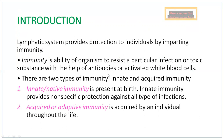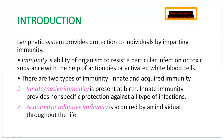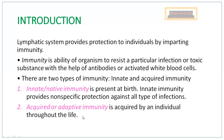We have two different types of immunity: innate and acquired immunity. Innate immunity is present right at birth and provides non-specific protection against all types of infections. Acquired immunity is acquired by an individual throughout life as we get exposed to different types of bacteria and viruses. Our immune system gets exposed to these antigens and in response, antibodies are produced which give lifelong immunity with the help of immunological memory.